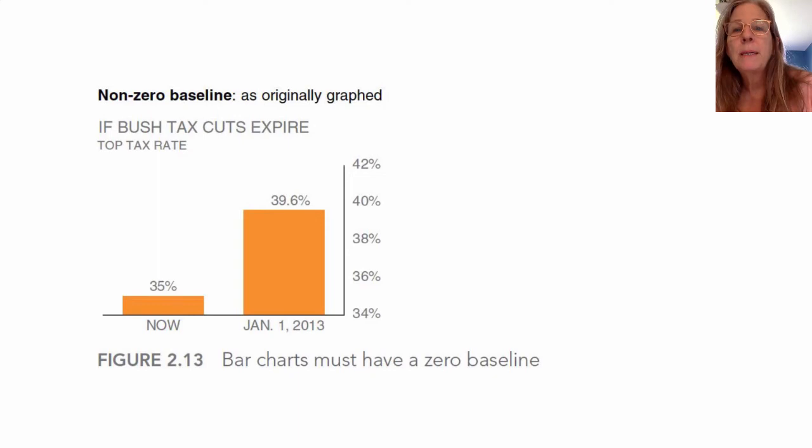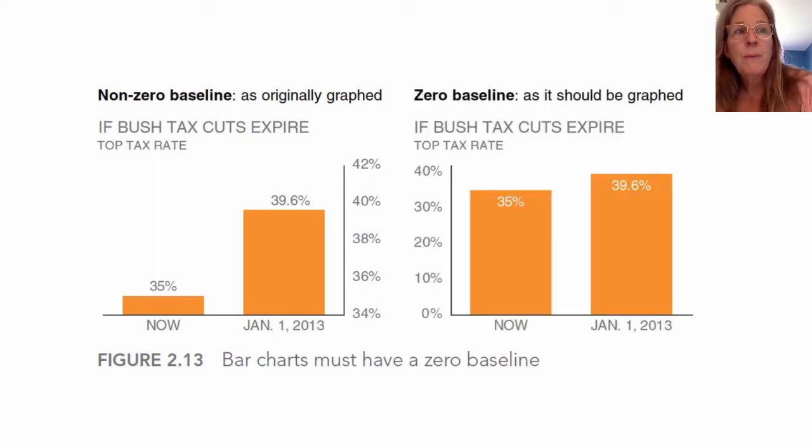It goes from 34 to 42 percent. This is a little bit misleading because if you use a zero value which is the one on the right here, it's going from 35 to 39.6. So it's not that much of an increase, although the one on the left looks like it's quite a bit of an increase. You need to be careful and most people agree that you should use a zero baseline when you're comparing things, otherwise you're skewing the way that somebody's seeing that.